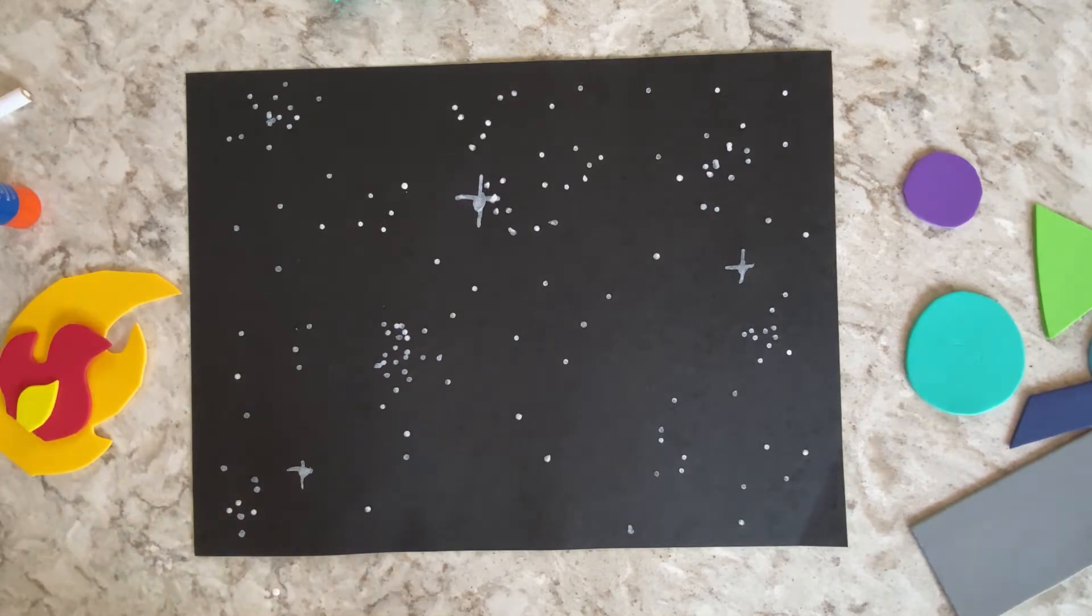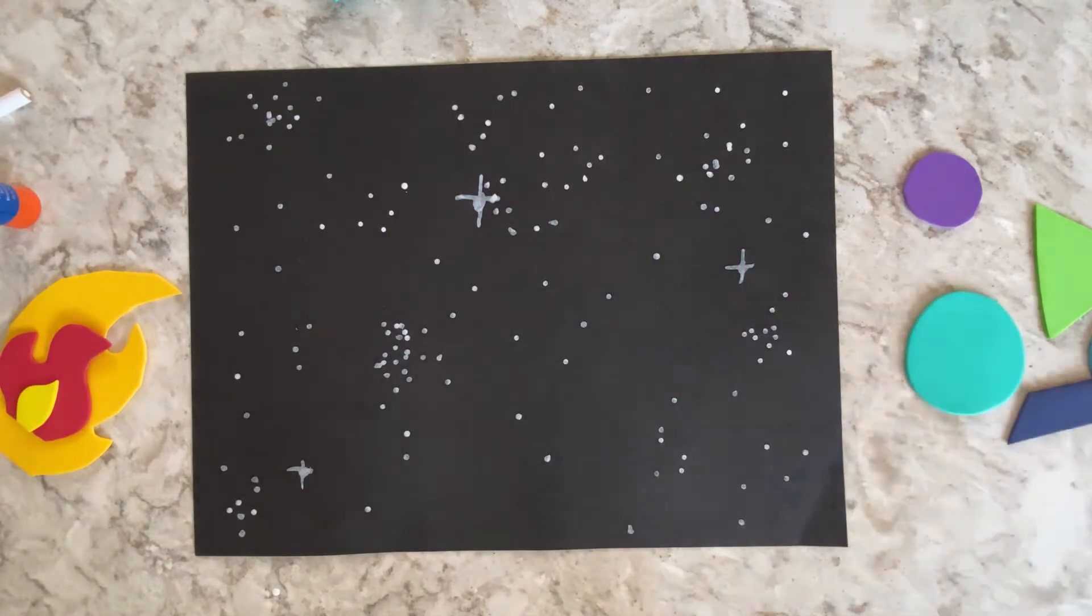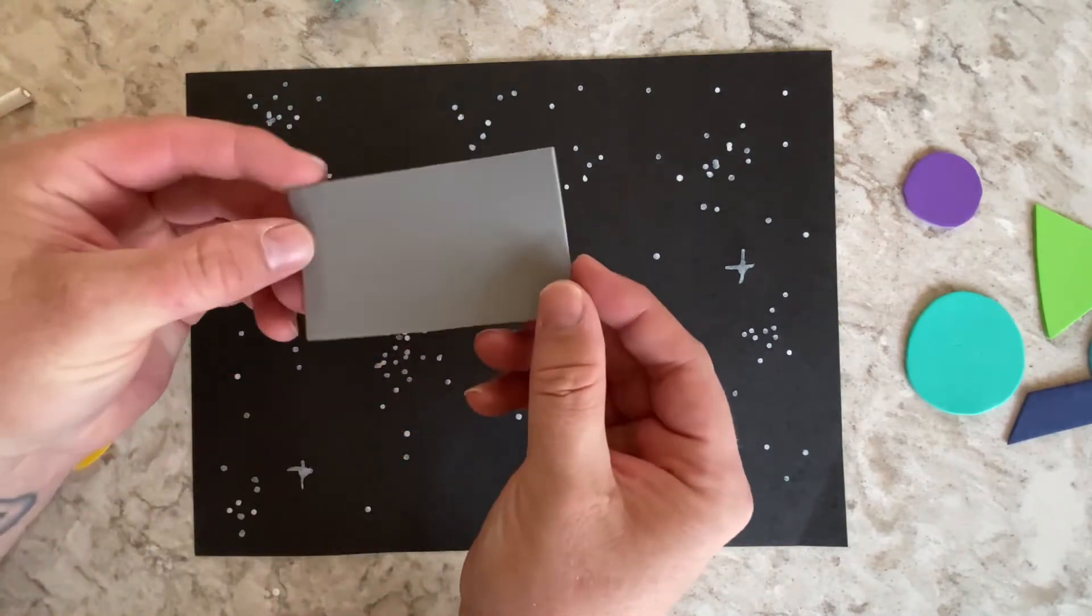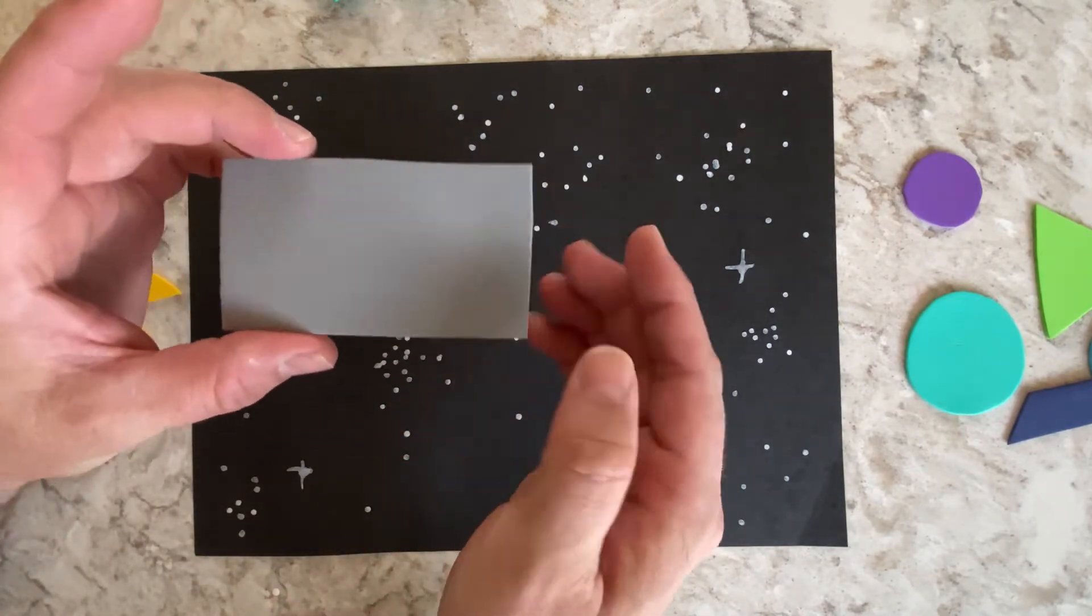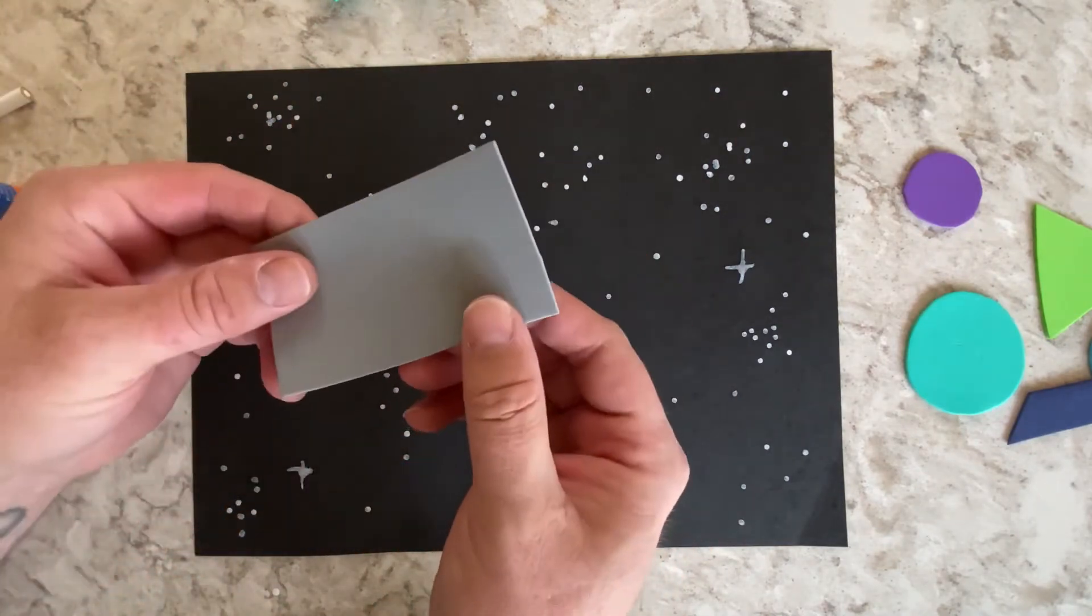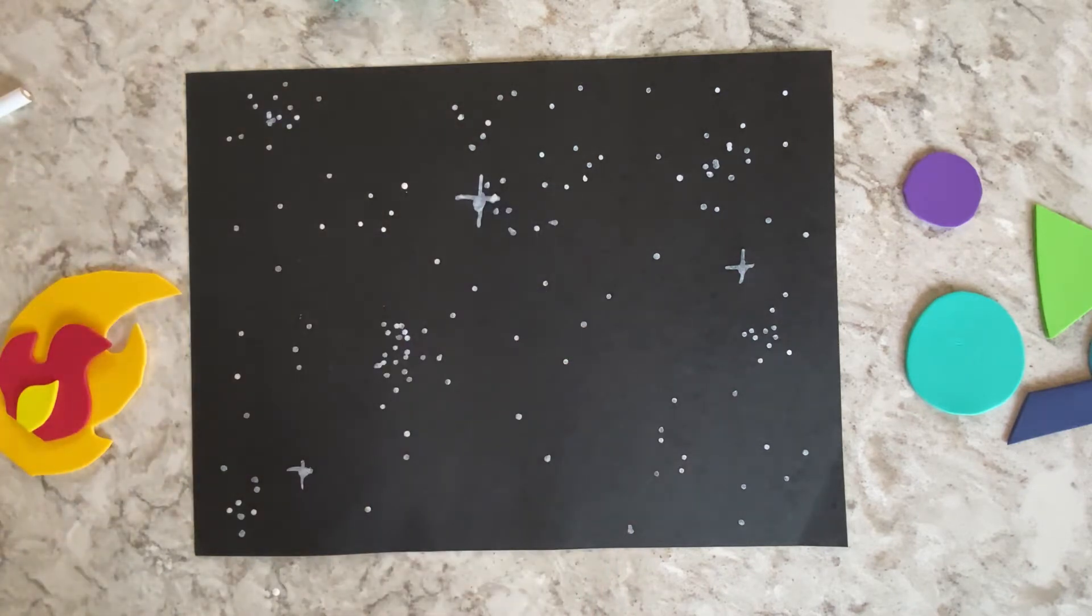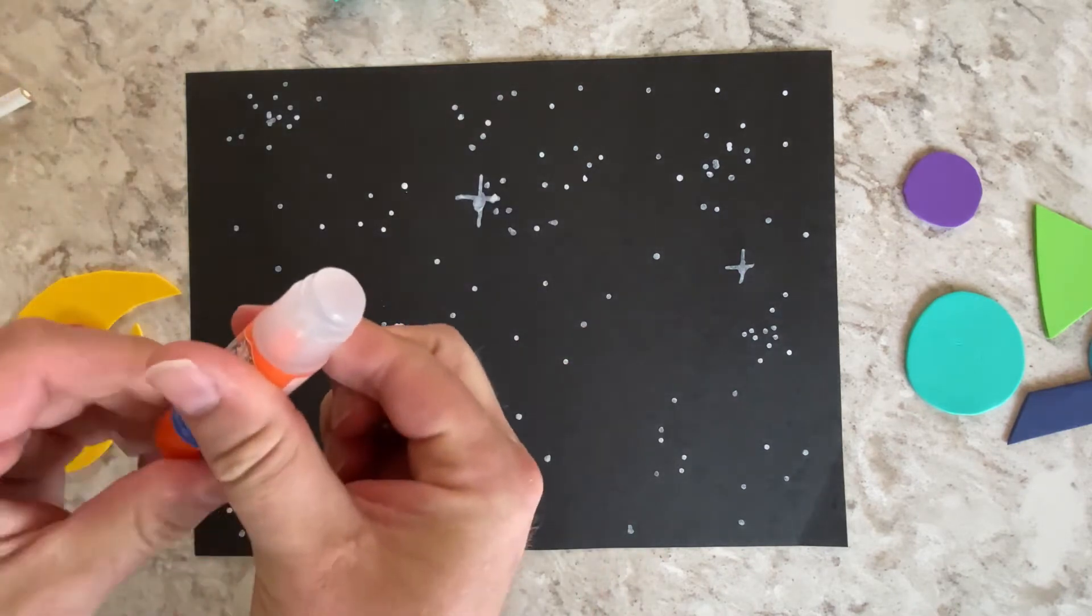Now, we're going to use our geometric shapes to make our man-made rocket ship. So, the first thing we need to do is we need the cabin of the rocket ship, the main compartment where the astronauts would be. So, we're going to get our glue stick out.